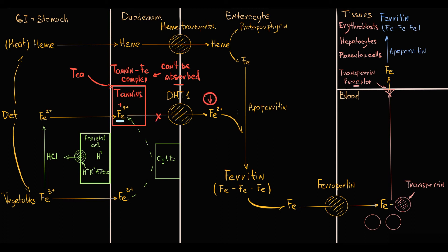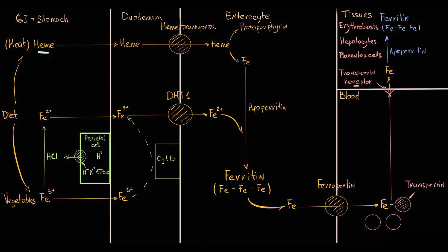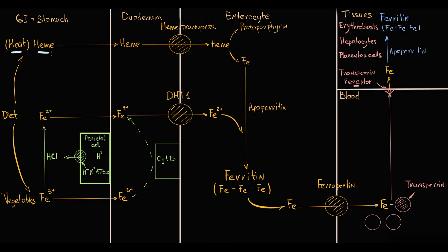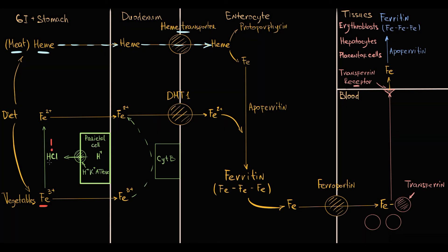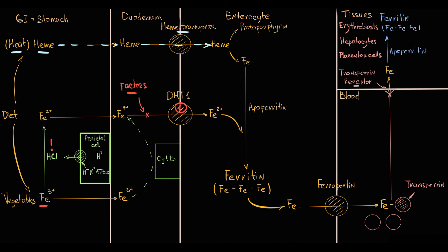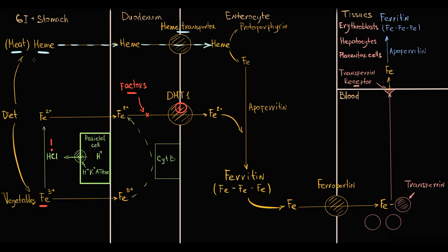So as we see with heme, everything is simple. We take heme from the meat, and then heme is absorbed by a heme transporter. With inorganic iron, everything is so complicated. We require proper gastric acid secretion, and also a lot of substances can decrease iron absorption. So there are a lot of reasons why heme is considered the optimal form of iron, and this makes meat the best dietary source of iron.